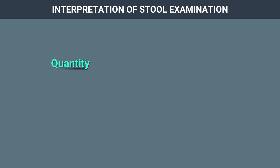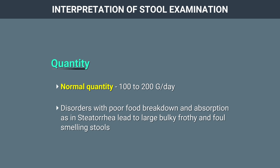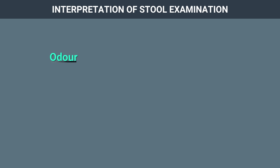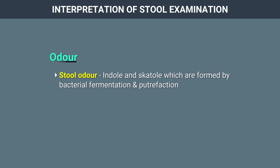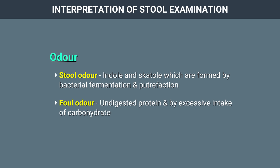Quantity of stool: normal quantity is approximately 100 to 200 grams per day. Disorders with poor food breakdown and absorption, as in steatorrhoea, lead to large, bulky, frothy, and foul-smelling stools. Odour: stool odour is caused by indole and skatol, which are formed by bacterial fermentation and putrefaction. Foul odour is caused by undigested protein and excessive intake of carbohydrate.